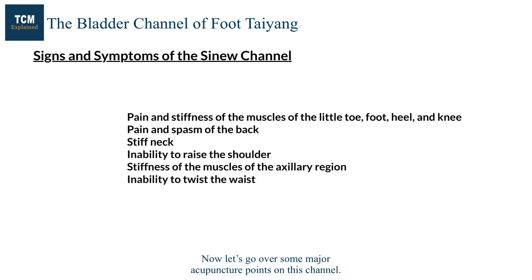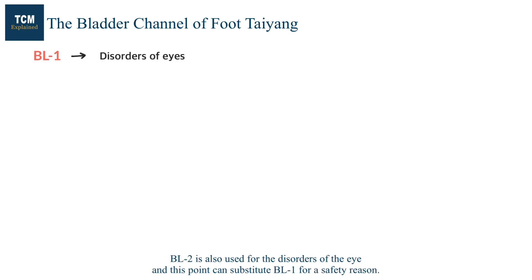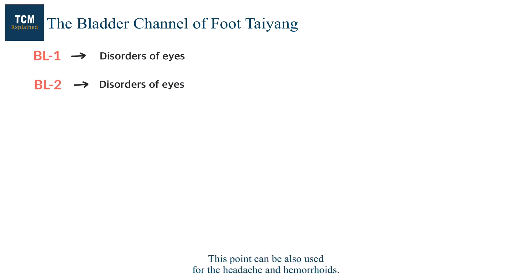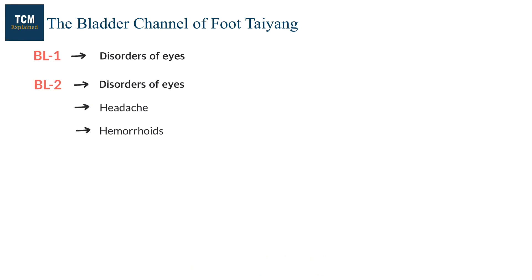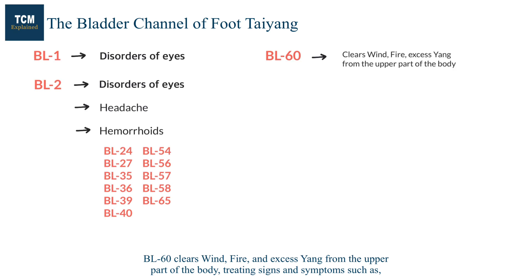Now let's go over some major acupuncture points on this channel. Bladder 1 is a major point for disorders of the eye. Bladder 2 is also used for disorders of the eye, and this point can substitute bladder 1 for safety reasons. Bladder 2 can also be used for headache and hemorrhoids. On the bladder channel, many points are indicated for hemorrhoids. Bladder 60 clears wind, fire, and excess yang from the upper part of the body.